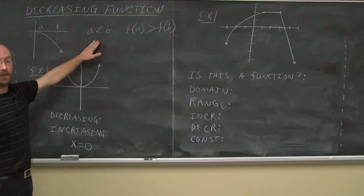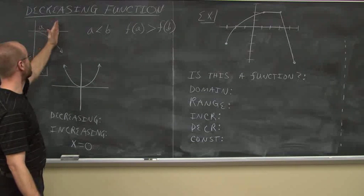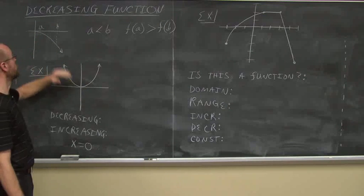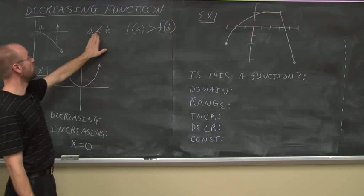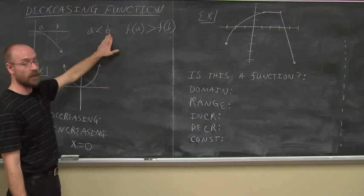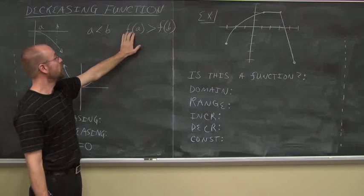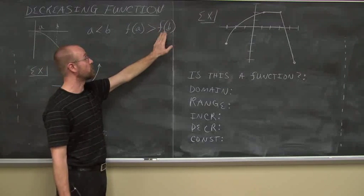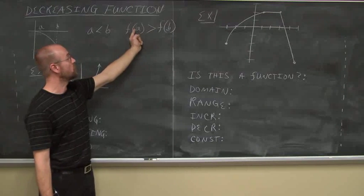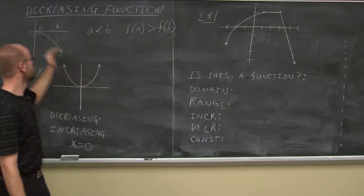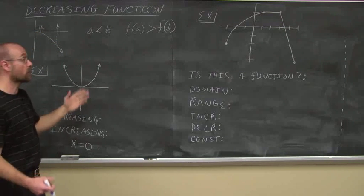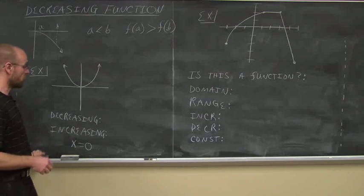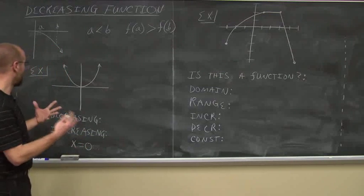A decreasing function uses the same property of moving from a to b left to right, but we see the function is going down — y is decreasing or getting more negative. Moving left to right, the value we first evaluated at, f of a, is greater than f of b. As we move further along the x-axis, our y values are decreasing. So this function is decreasing over some interval from a to b. We write these in interval notation.